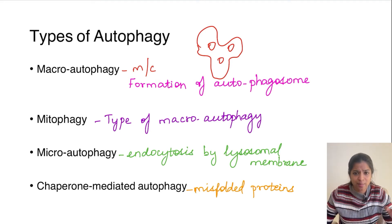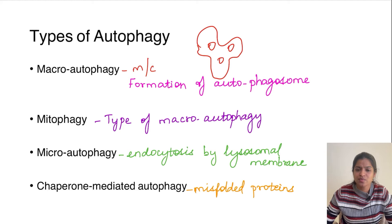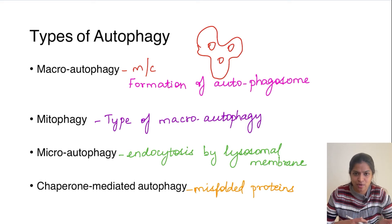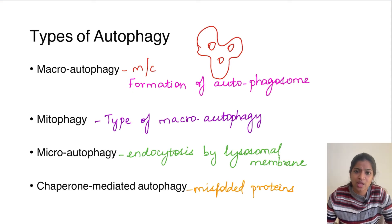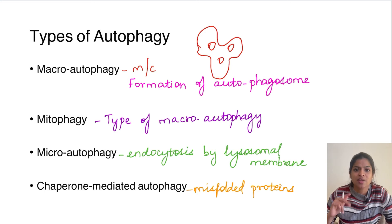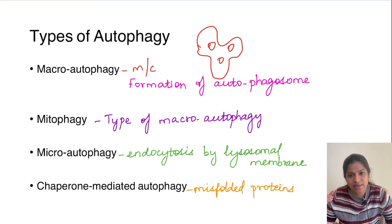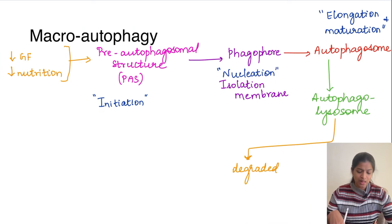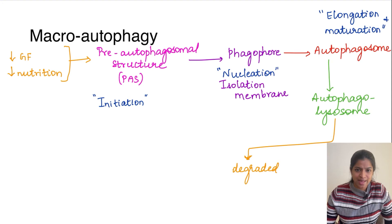The fourth type is chaperone-mediated autophagy. Chaperones are responsible for the proper folding of proteins. Whenever there are misfolded proteins, a chaperone will associate with them and assist either in correcting the folding or in degradation. So misfolded proteins undergo autophagy by this chaperone-mediated autophagy. Notably, misfolded proteins can also lead to apoptosis, so here we see they can also lead to autophagy.